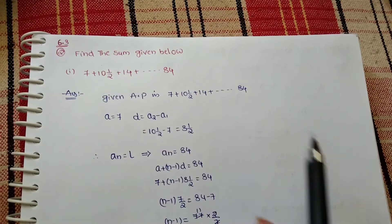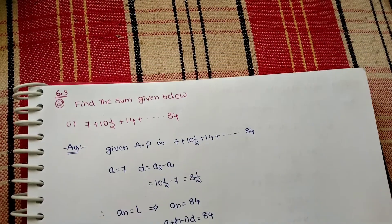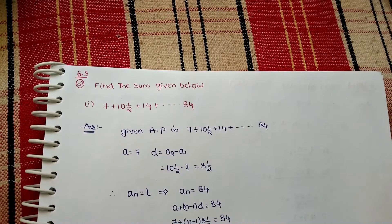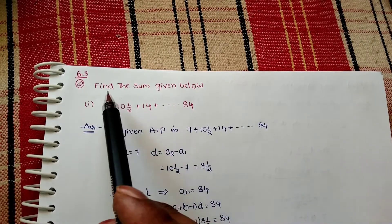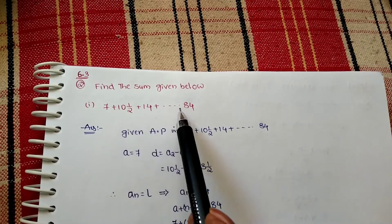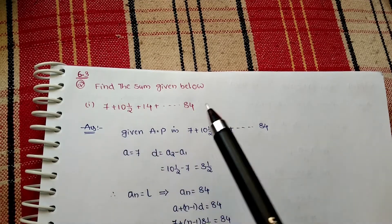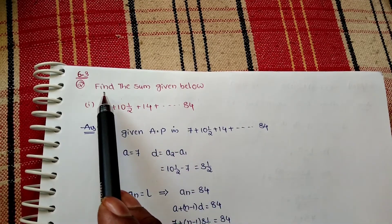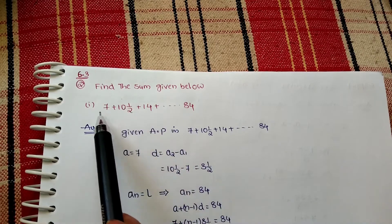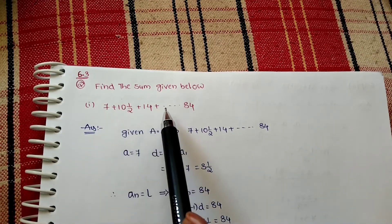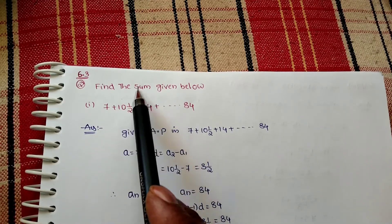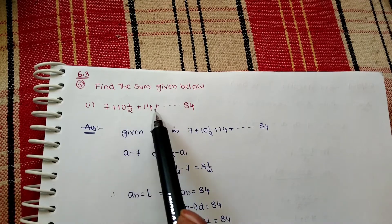Now, see question 6.3. They have given one progression, that is AP. We need to find the sum of given below. They've given one progression, right? We need to find that sum of that progression.